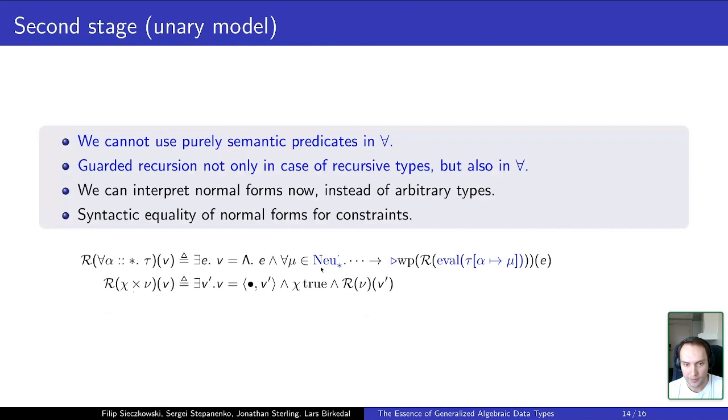And if we construct interpretation in this way, we are after a problem that we lose relational reasoning principles, because now we quantify over syntactically elements, and we cannot instantiate with an arbitrary semantic relation and prove interesting binary properties.